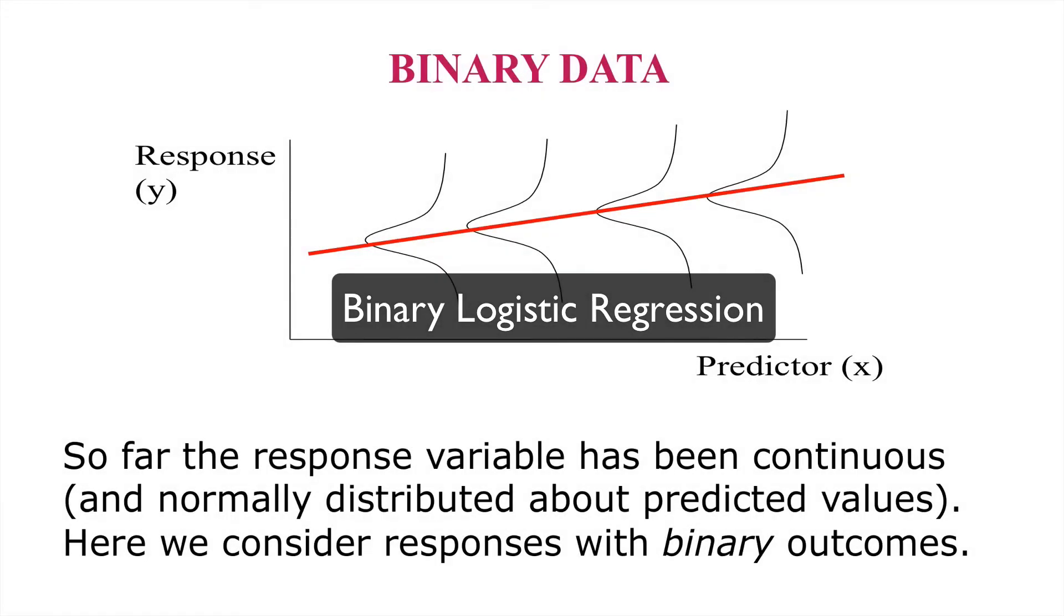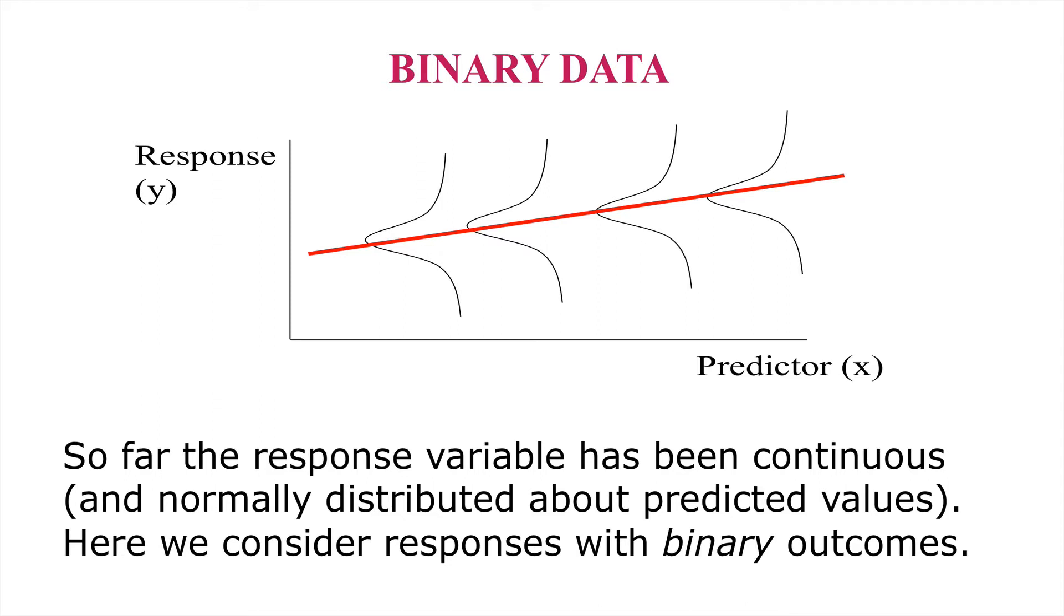Hello. So far we've considered general linear models in which a continuous response is assumed to be normally distributed around a given model. Furthermore, we assume that the variance of our response around that model is the same for all levels of the predictor variables in that model. However, in some cases our response variable cannot be considered continuous but takes a different form.